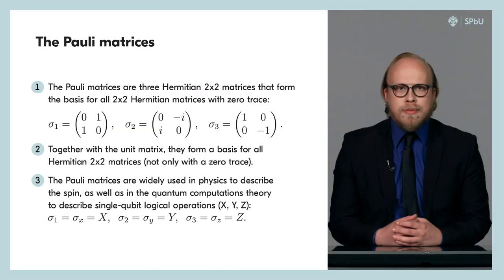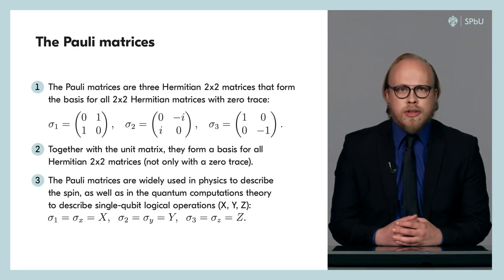So, as we know, the Pauli matrices are the set of three Hermitian 2×2 matrices. On the slide that you see, these matrices are denoted with σ₁, σ₂, and σ₃, and their explicit form is written out. Recall that the Pauli matrices form the basis of all Hermitian 2×2 matrices with zero trace. And if we add an identity matrix to the Pauli matrices, then they form a basis for any 2×2 Hermitian matrices.